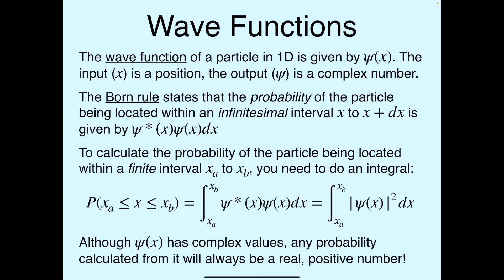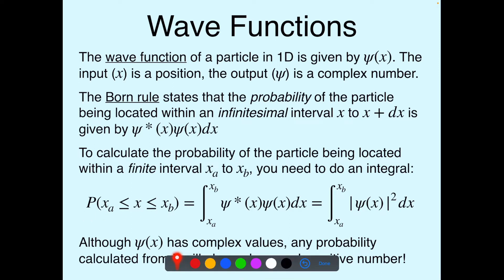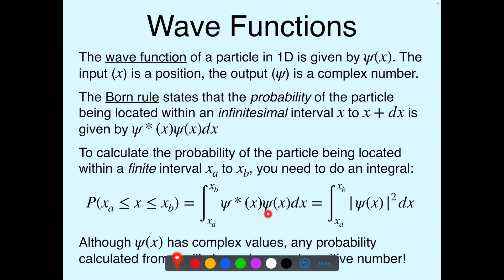That's not generally how we'll make calculations. In general, we want the probability that the particle is in some finite interval, say xa to xb. To do that, we perform an integral: the probability is the integral from xa to xb of psi star times psi dx, which can be written as the magnitude of psi squared. Since we're dealing with complex numbers, psi star times psi always gives a real positive number — so probabilities always have real positive values, even though wave functions have complex values.